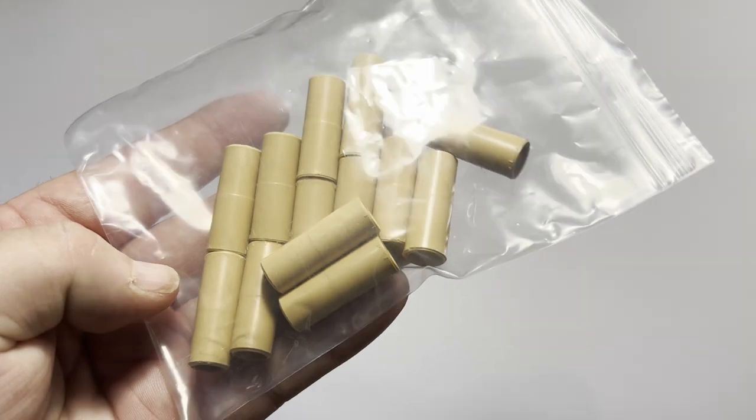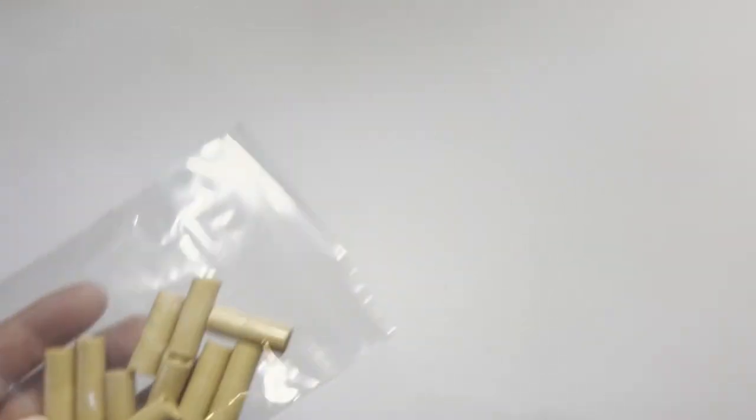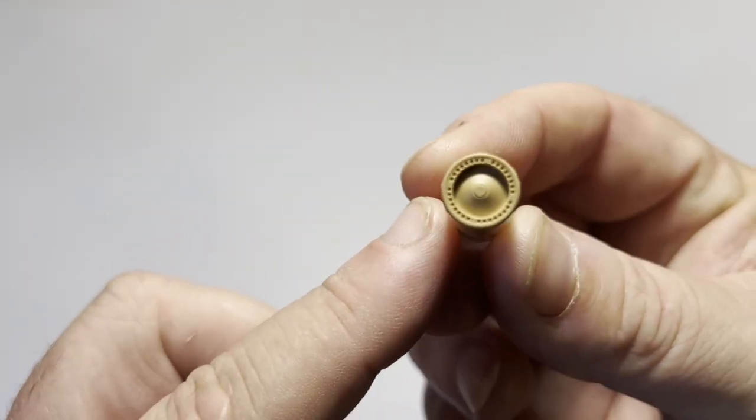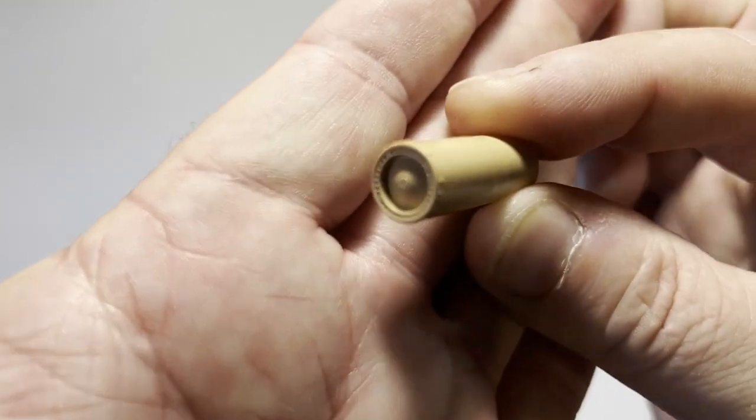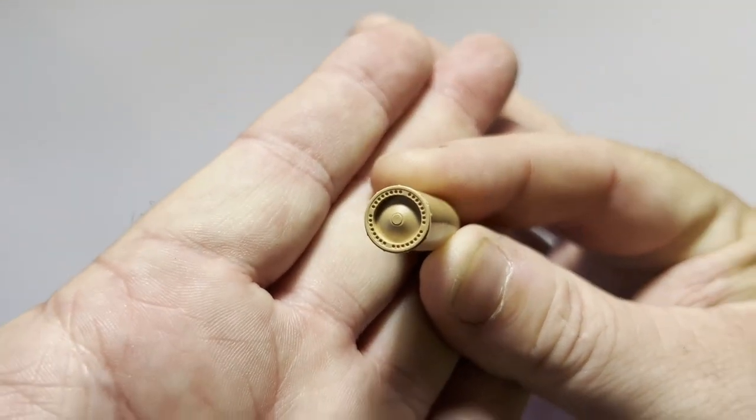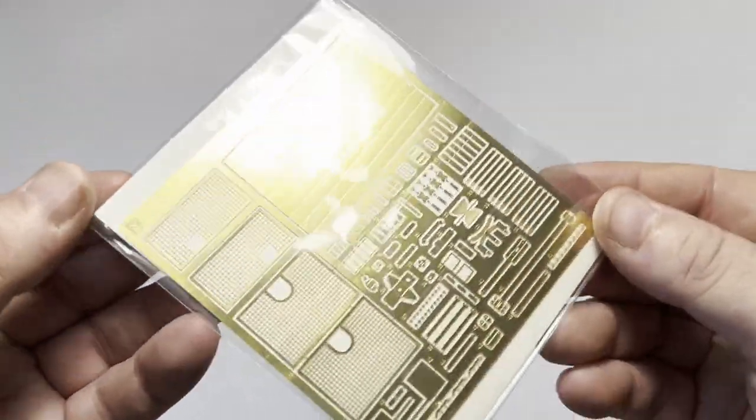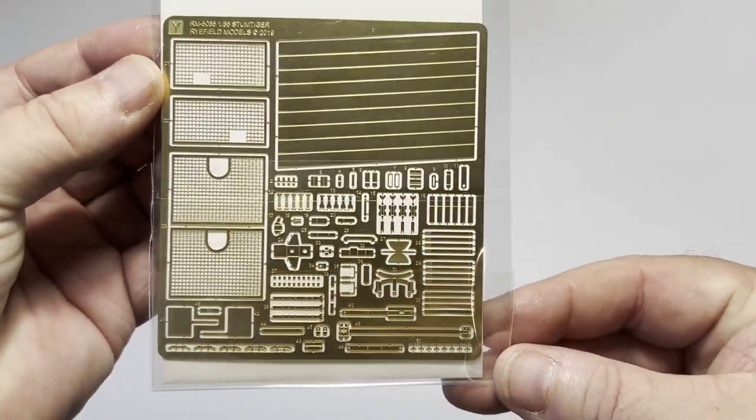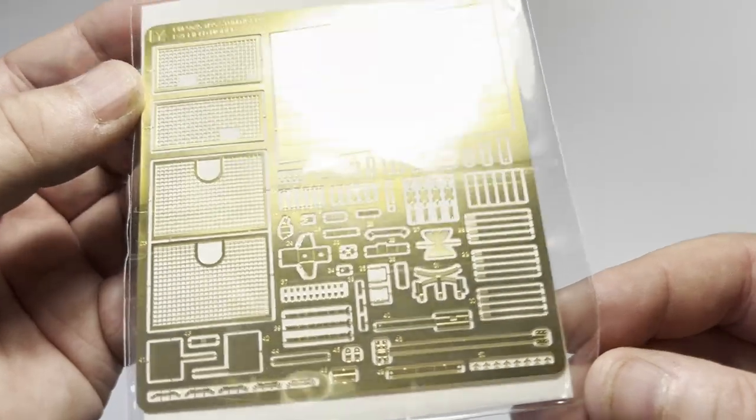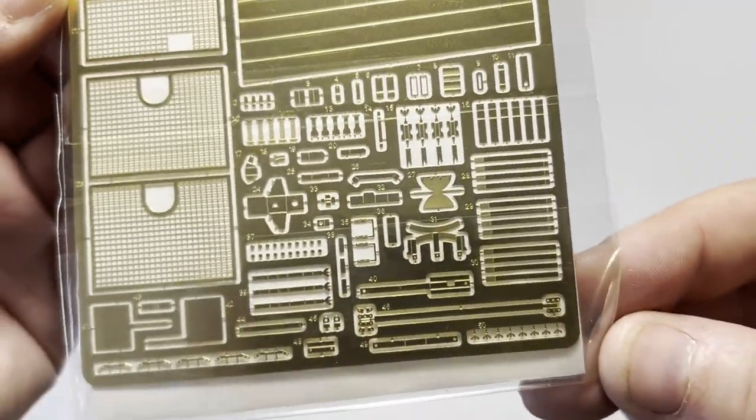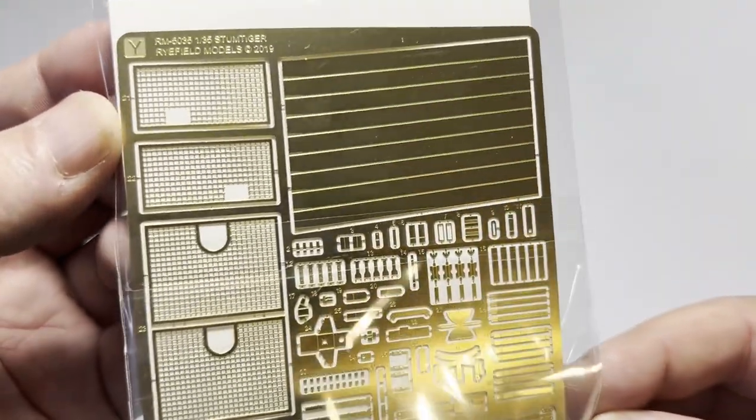Included in the box is a bag of the 38 centimeter mortar shell cases. This gives us the option to use them as fired or unfired as the warhead and case are two separate parts. The included photo etch sheet contains all the necessary tools and accessories that you'll need. It's a thin sheet so will be easy to bend into shape. Also included is a strip of copper wire and two polycaps.